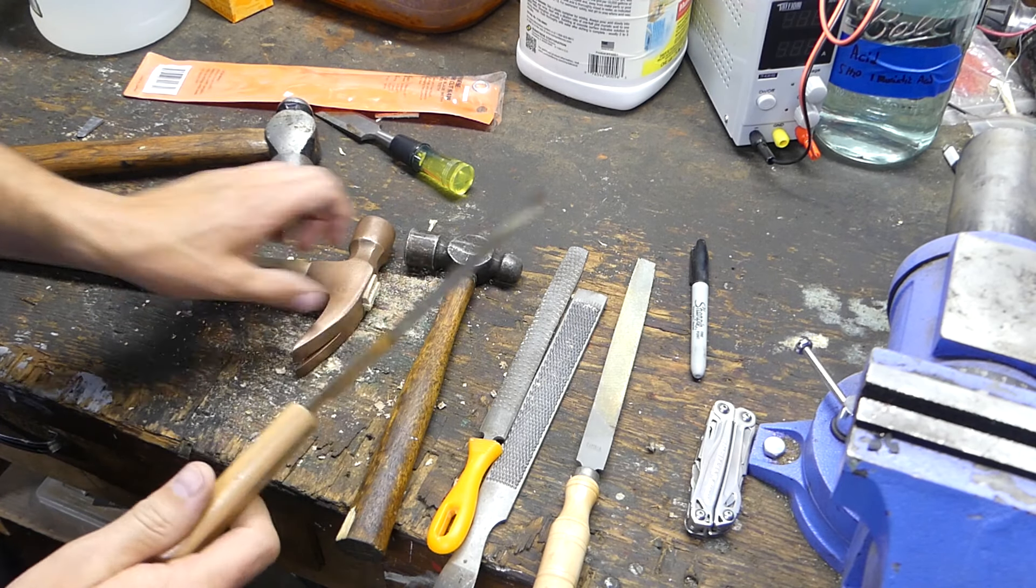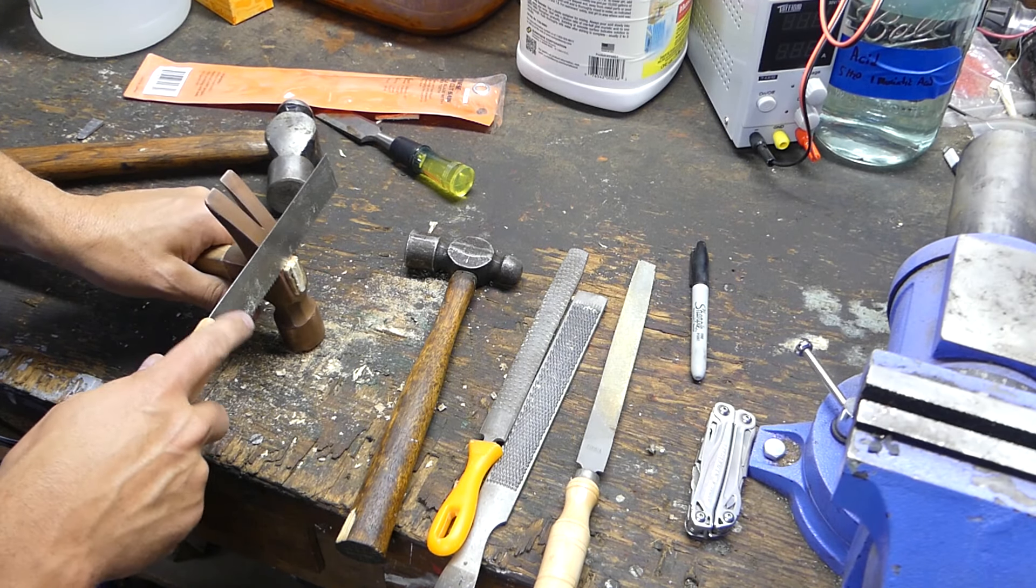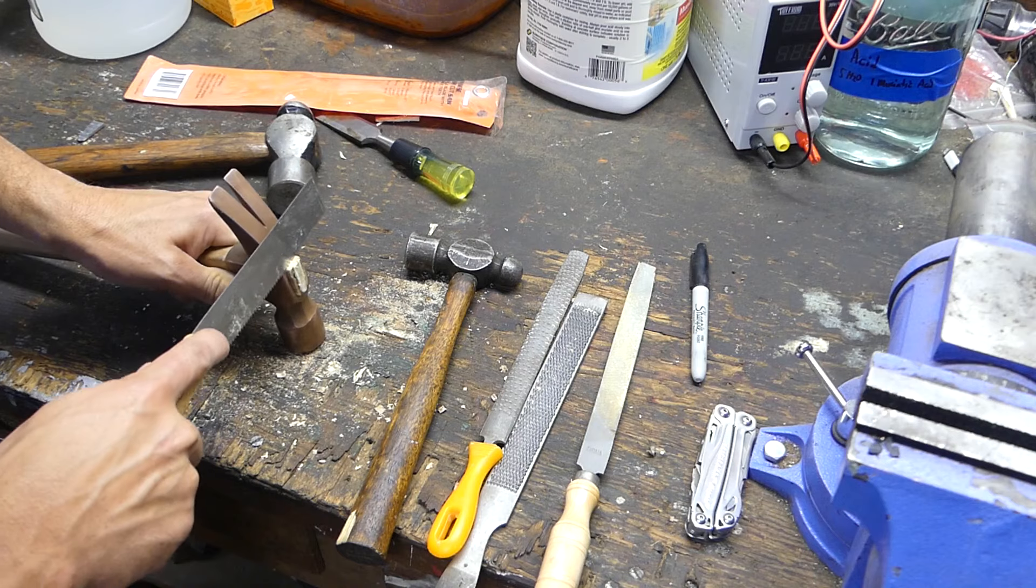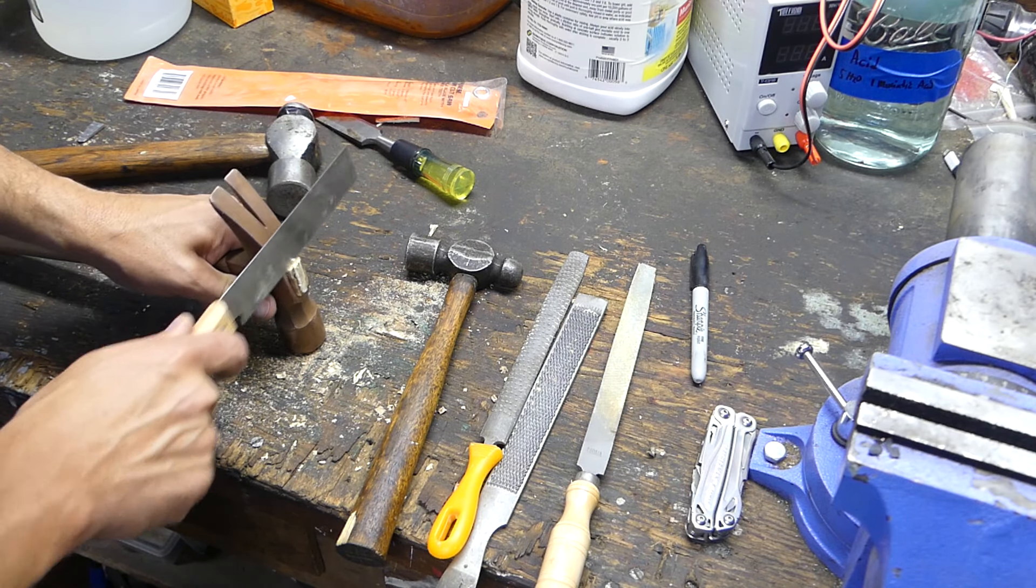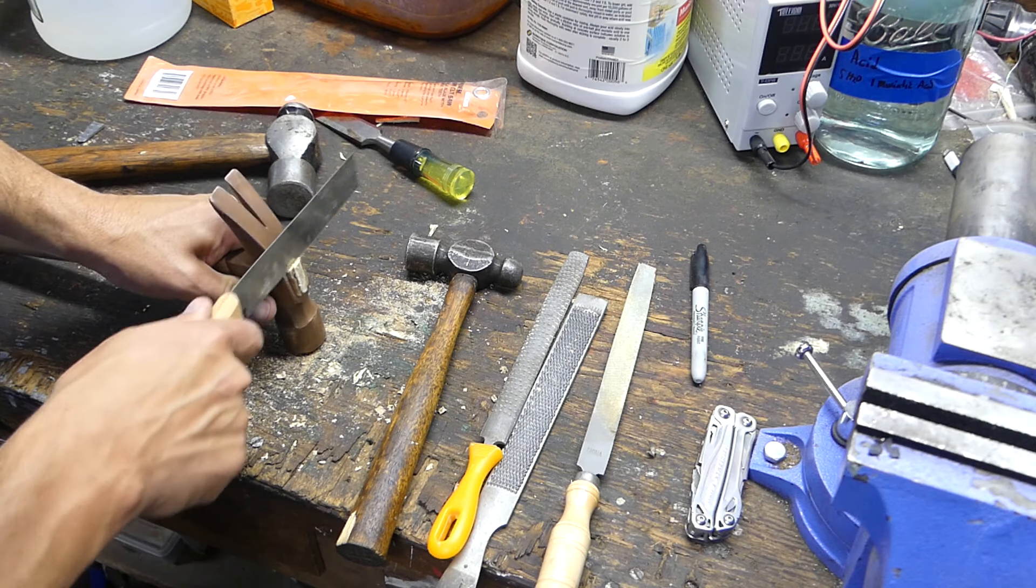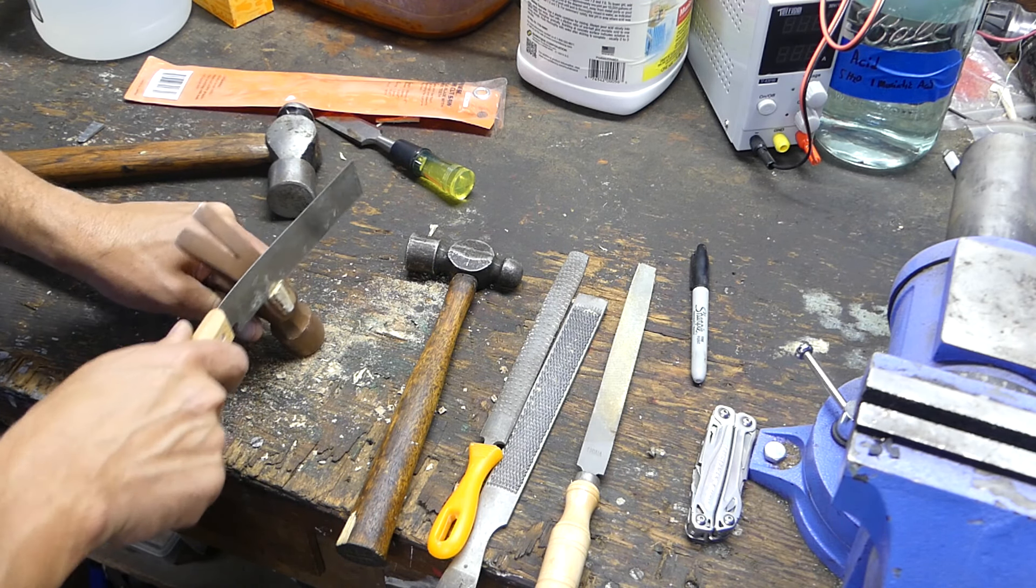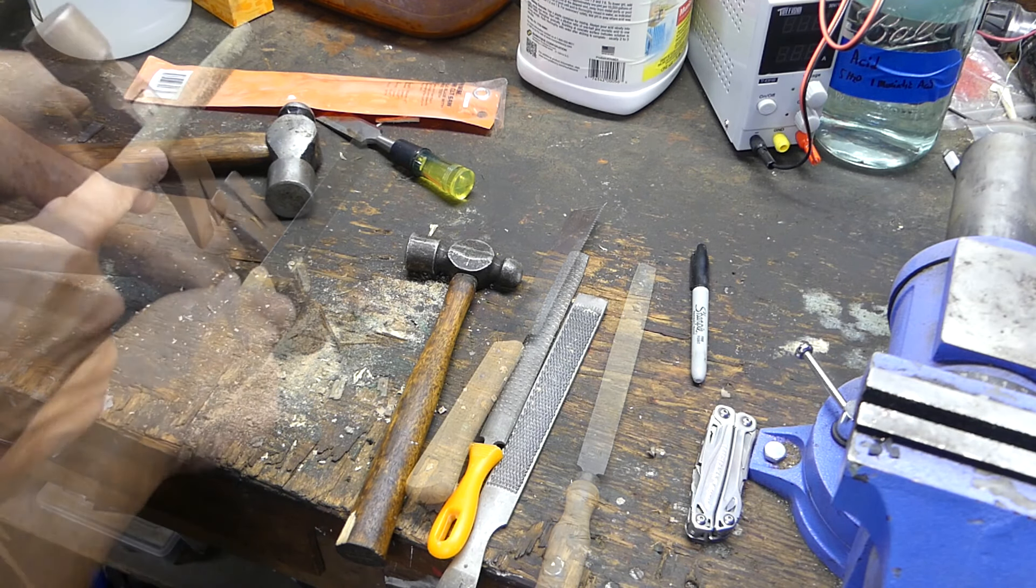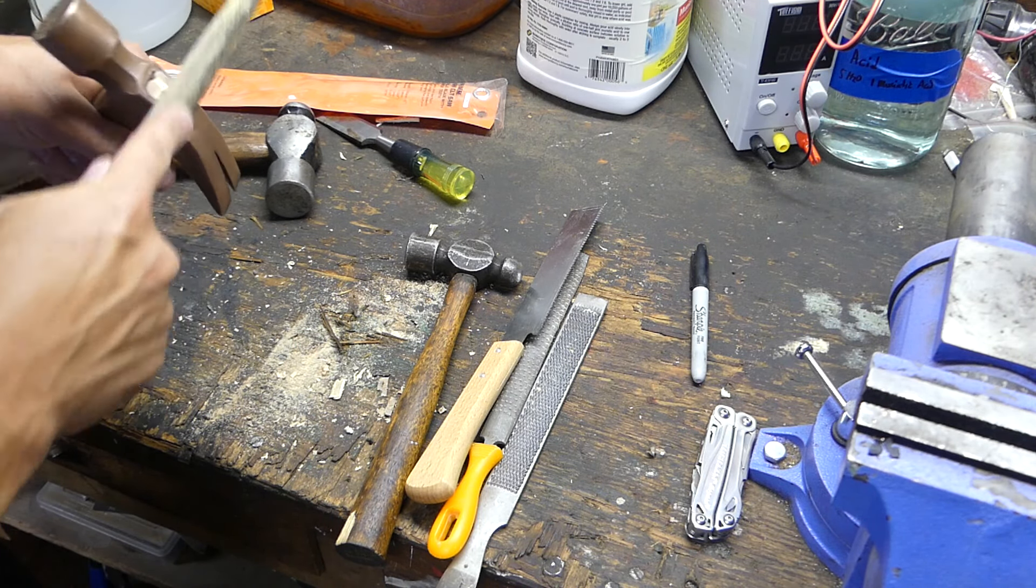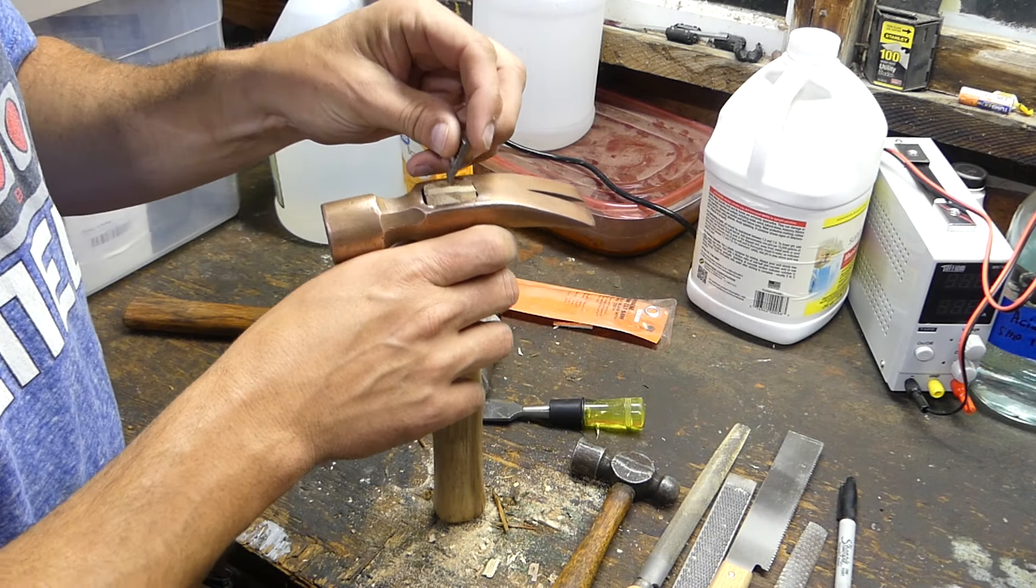I used a flush cut saw to cut it off, careful not to get into the copper finish too much. And just trim it off so it's flush. I couldn't cut straight partly because I was worried about getting into that copper. I didn't want to dig into it because that would have scratched it up. So I used a file to touch it up.